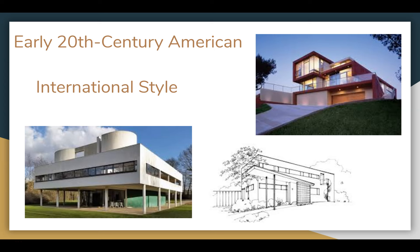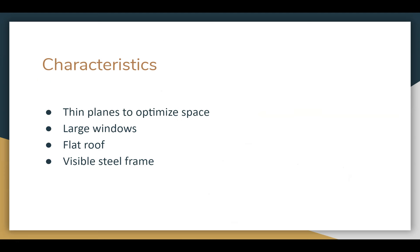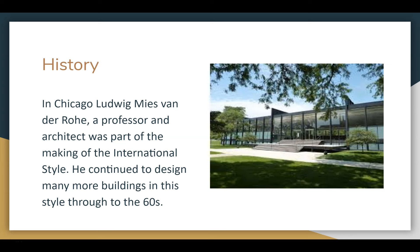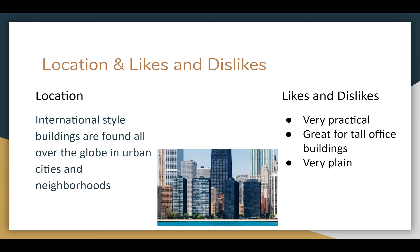Next we have the International Style. Characteristics: thin planes to optimize space — thin walls and such — large windows, a flat roof, and a visible steel frame. History: they were made in Chicago by Ludwig Mies van der Rohe, a professor and architect who was part of creating the International Style. He continued making buildings in this style through the 1960s. Location: International Style buildings are found all over the globe in urban cities and neighborhoods. Likes: it's very practical and great for tall office buildings. Dislikes: it's very plain.